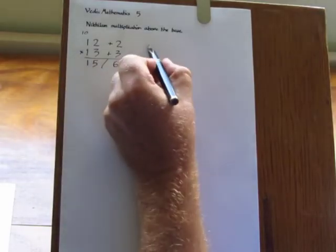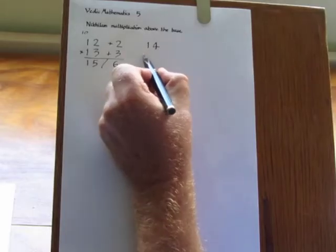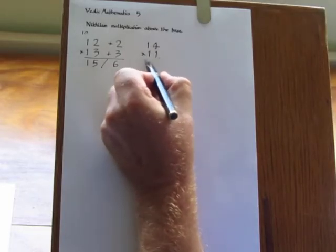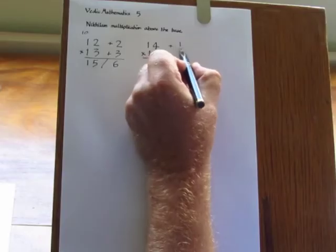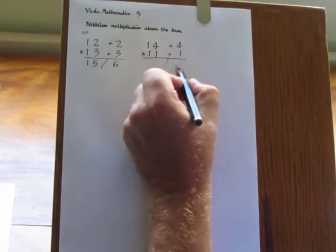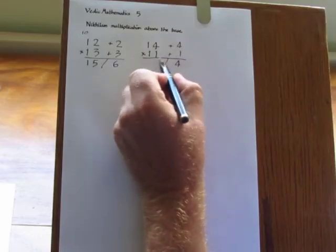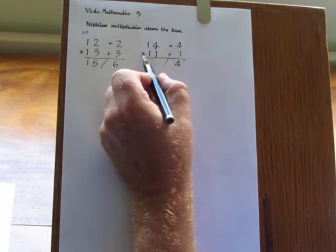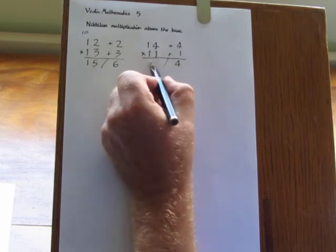Another example: 14 times 11. The surpluses are 4 and 1. 4 times 1 is 4. And cross add to the left hand side. 14 add 1 gives 15.